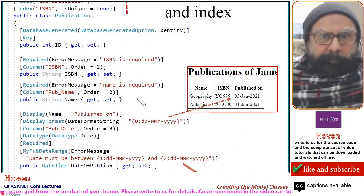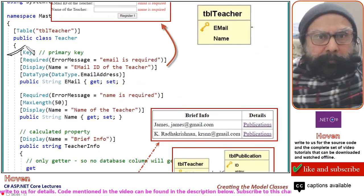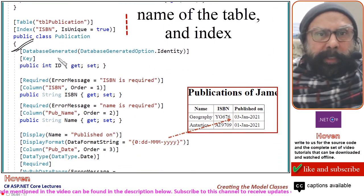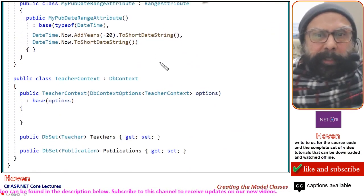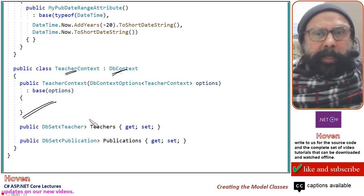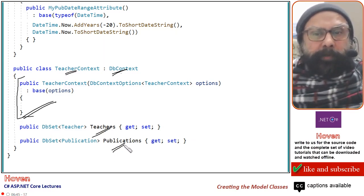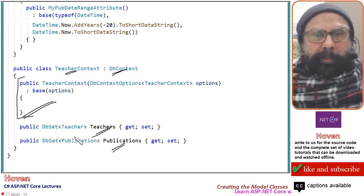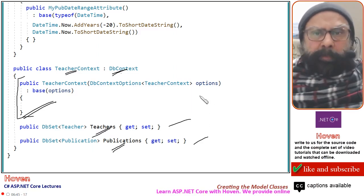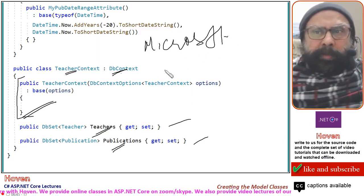With this, both tables are complete — the Teacher table and the Publication table. Now let us also complete the DbContext. We create a class TeacherContext inheriting from DbContext. The constructor is required — refer to previous tutorials for a detailed explanation. We add a DbSet<Teacher> for the Teachers table and a DbSet<Publication> for the Publications table. Each table needs a DbSet in your DbContext.